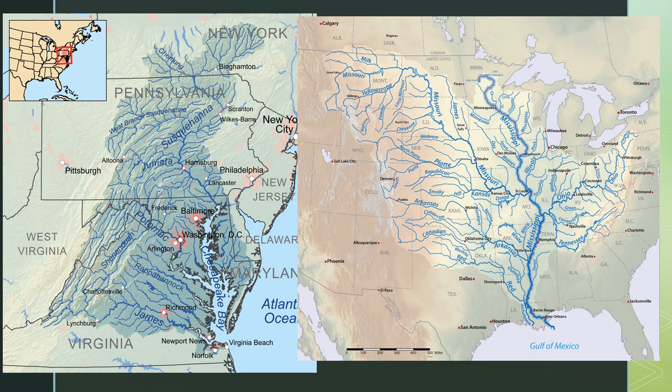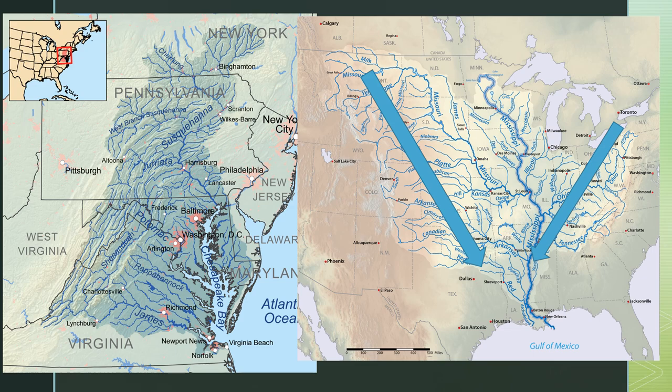The map on the left shows the Chesapeake Bay watershed. All of the rivers and creeks highlighted in this area flow into the Chesapeake Bay and eventually the Atlantic Ocean. This map shows all the rivers and creeks that flow into the Mississippi River and eventually the Gulf of Mexico.